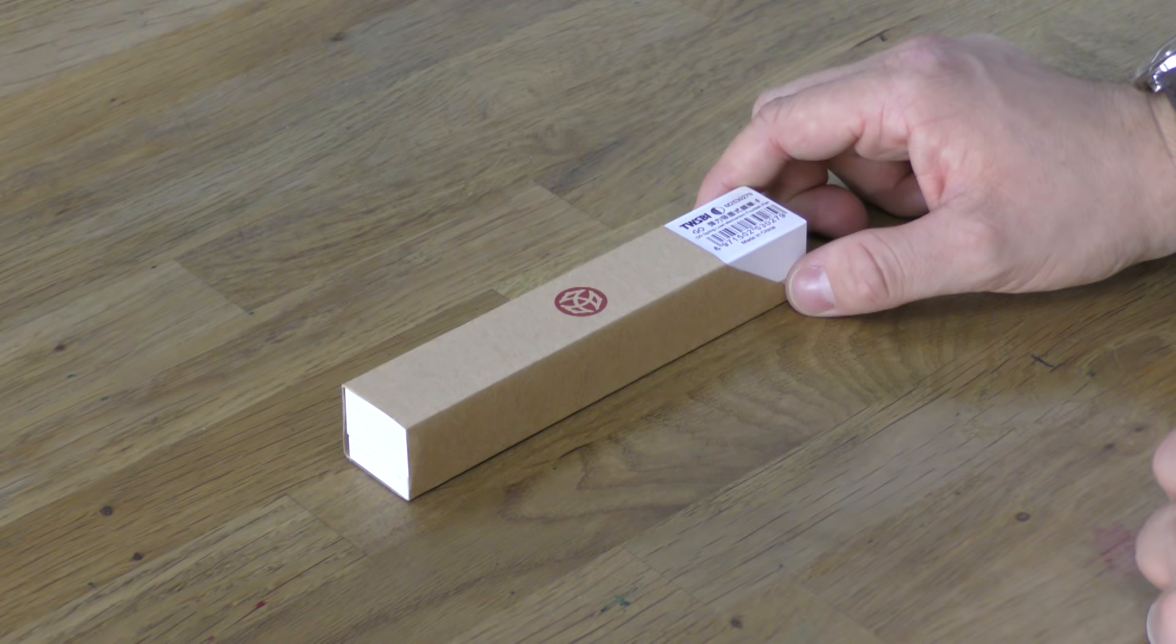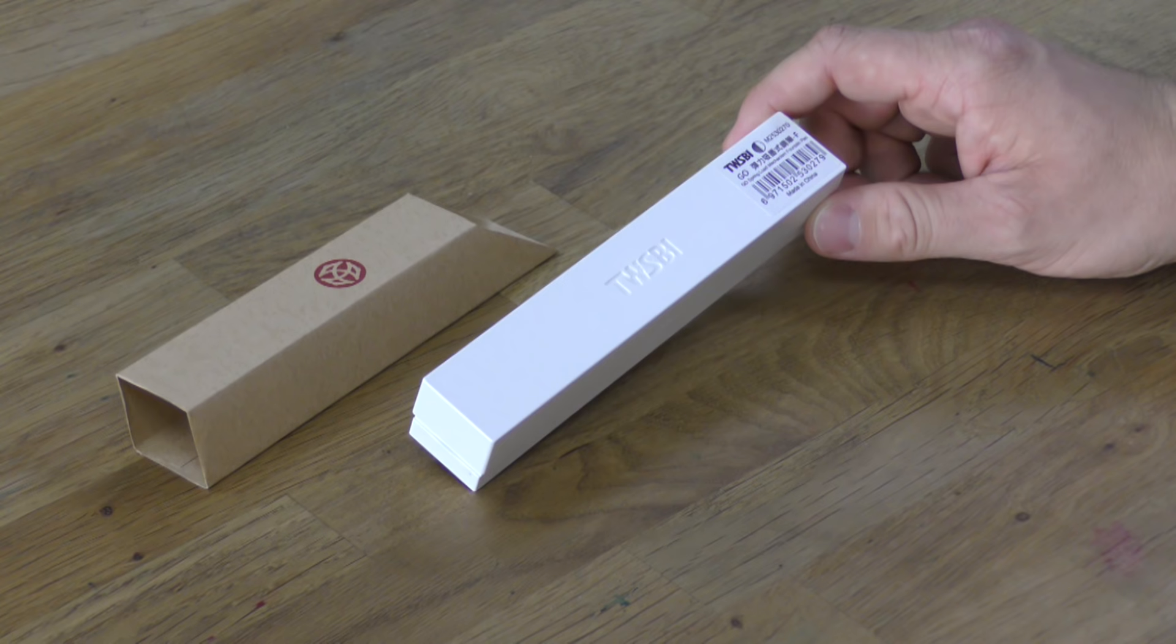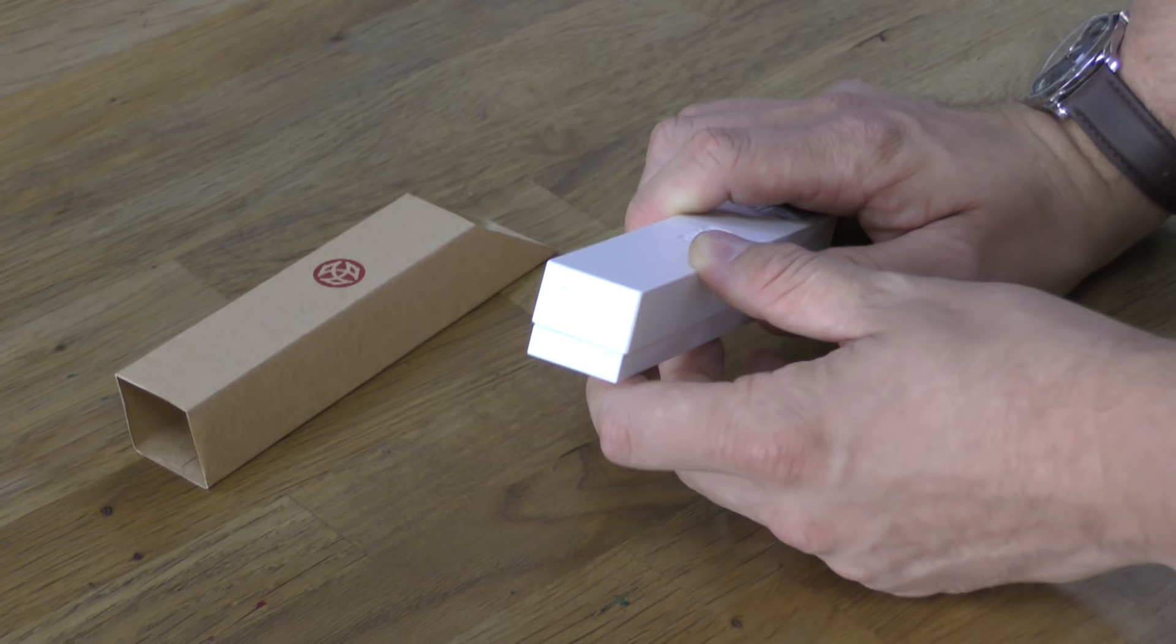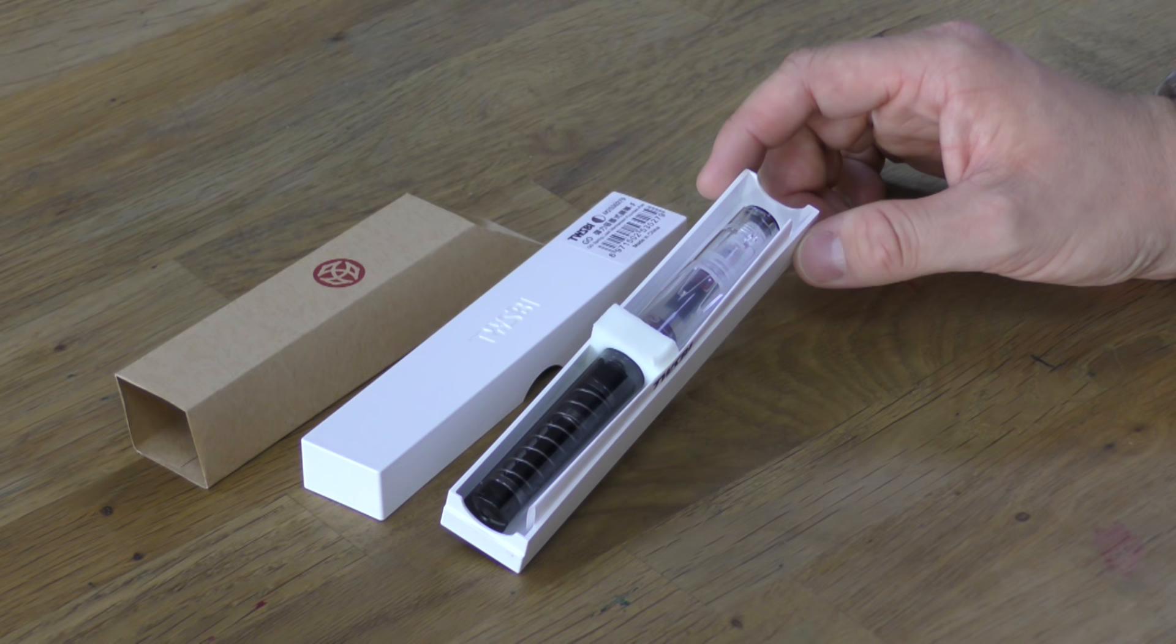The cardboard sleeve on the outside continues the theme that they introduced with the Eco. So that slides off and reveals this simple white plastic box that's got the TWSBI name on the front of it. It is sealed with clear stickers when it's new, but we've taken the stickers off just to make it a little bit easier to show you in the video.